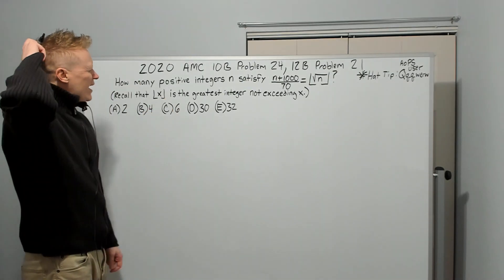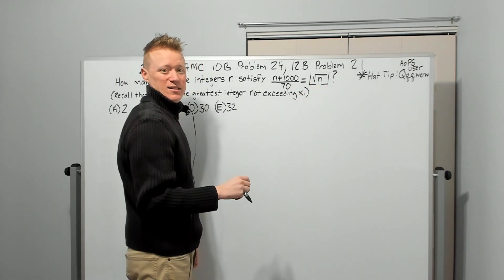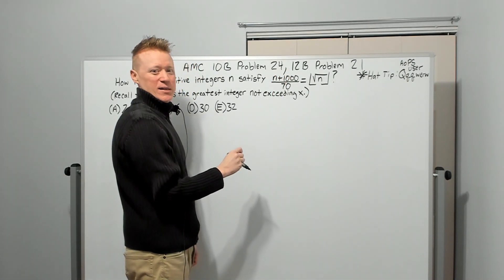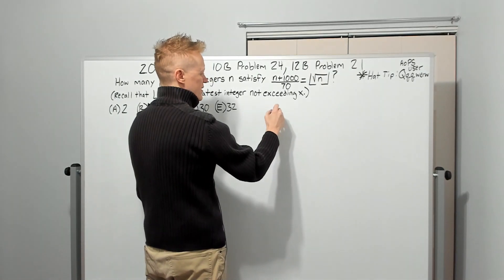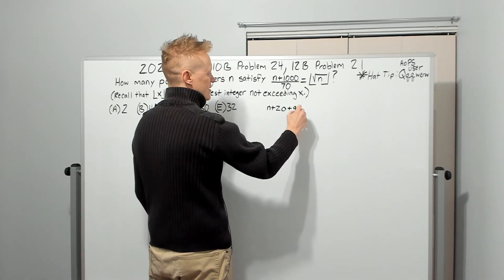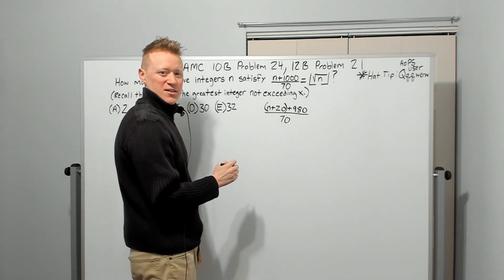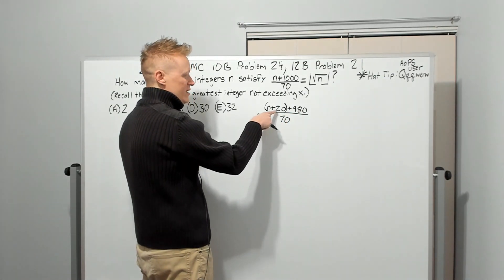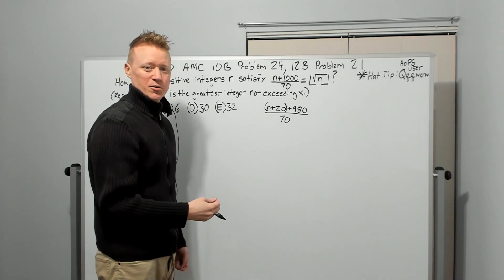Okay. So we've got the answers. How do we approach this? Well, the first thing you might think of is what we said. This is an integer. So if this is going to be an integer, once you round it down, the left side must be an integer also, which means we can play around with this 70 has to divide into it. So for example, I know that if I write it as (N + 20 + 980)/70, that the expression on the left must be divisible by 70 because the expression on the right is divisible by 70.